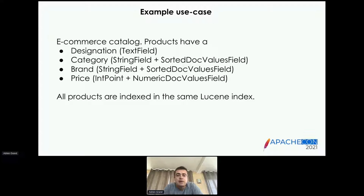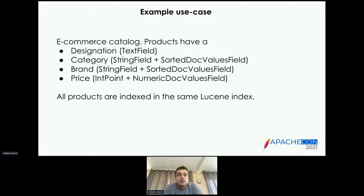Here's a use case I'll use throughout this presentation. I'm going to assume you have an e-commerce catalog: products have a designation (what the product is about), a category, a brand, and a price. The designation is indexed with a text field supporting full-text search; categories and brand are indexed with keyword fields supporting exact search plus faceting; and price is a numeric double field so you can sort, filter by price range, or compute price-range facets.